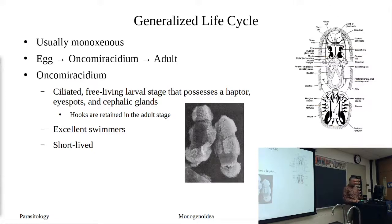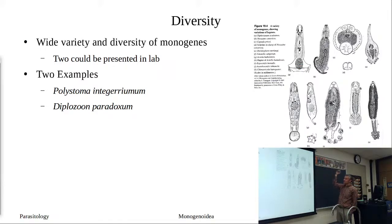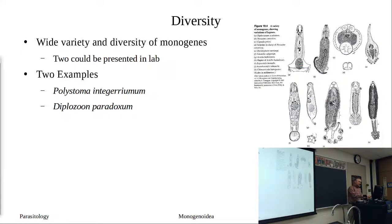The generalized life cycle is: egg → oncomiracidium → adult. We have a wide diversity in this group. In the lab you have two to look at and identify. Looking at the range of variation — just look at the opisthaptor and see the variation: suckers versus non-suckers versus hooks versus loculus-like structures. Two examples we'll go through in detail are Polystoma integerrimum and Diplozoon paradoxum, because these two are pretty remarkable.